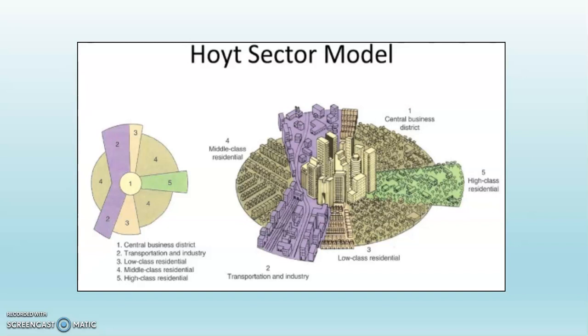The first alteration to the concentric zone model came in 1939 from Homer Hoyt — the Hoyt Sector Model. You can see by looking at it that it maintains the basic structure of the concentric zone model, but it adds a little complexity, most notably a transportation corridor that runs through the model city.